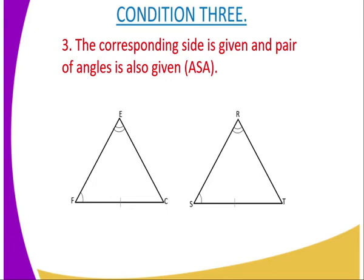we have triangle EFC and the triangle RST. And therefore, the sides which are supposed to be equal to one another in the two triangles, we have side FC is equal to side ST. And also the angle RSR is equal to angle CFE. And also the angle FEC is also equal to angle SRT.